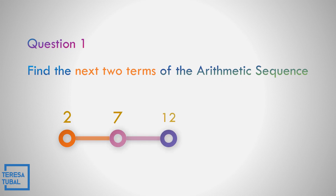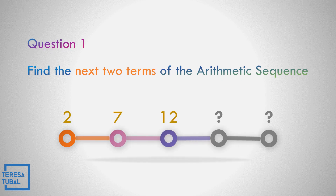Question number one: Find the next two terms of the arithmetic sequence 2, 7, and 12. What do you think is the next two terms? Correct. The next two terms are 17 and 22, because the common difference is equal to 5. How to get 5? By subtracting the second term by the first term: 7 minus 2 equals 5.